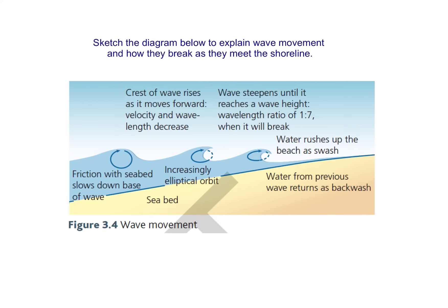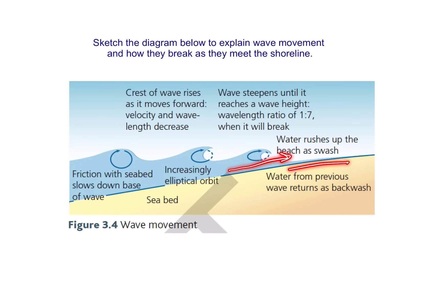Wave movement at the beach is really useful to have in the back of your mind. Friction within the seabed slows down the wave. The crest of the wave continues to move forward. We then get this elliptical orbit — think about a squashed circle. The wave continues to get steeper before it rushes up the beach as swash, and returns back out to sea as backwash.